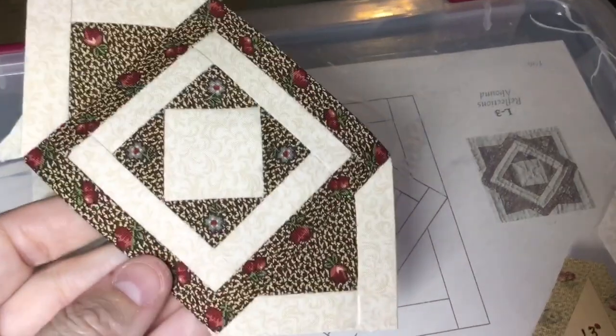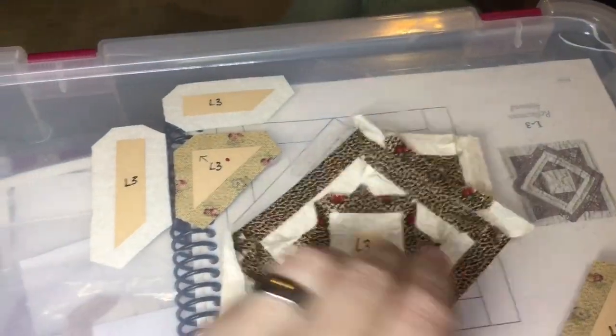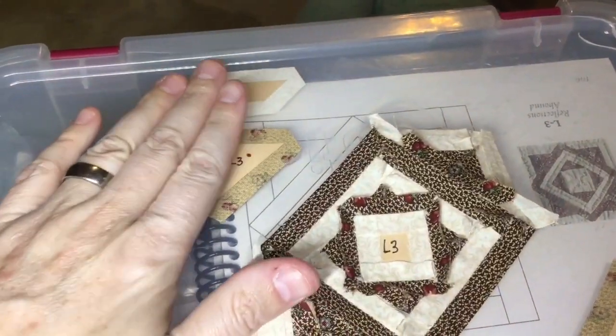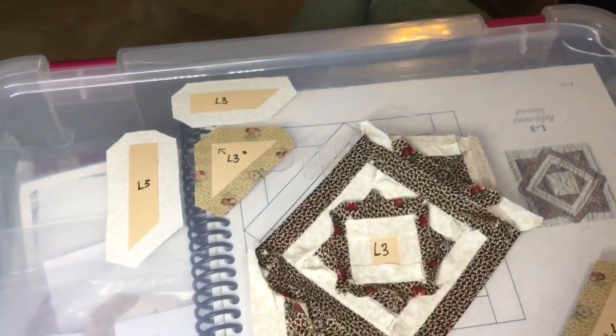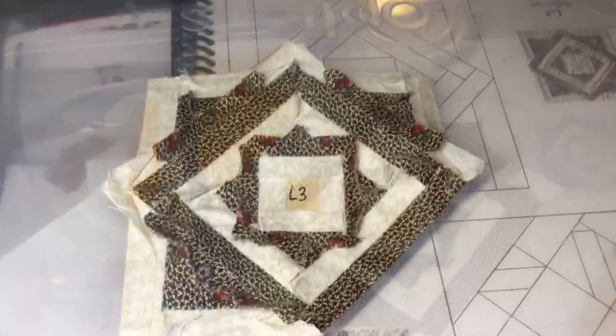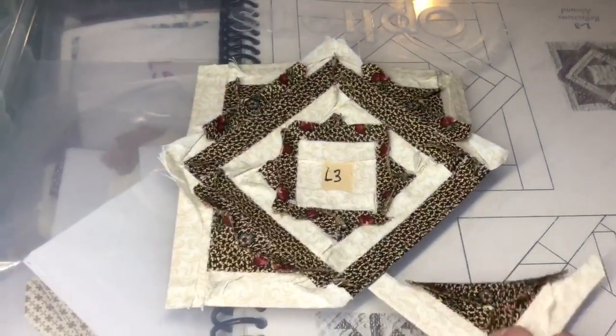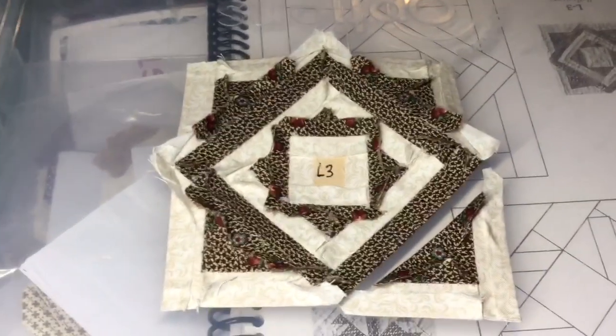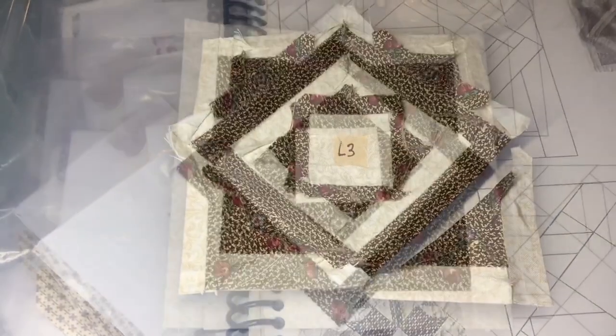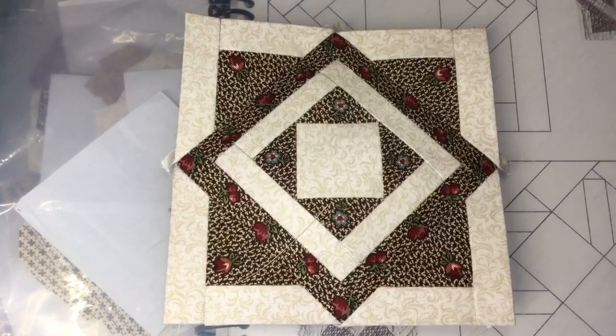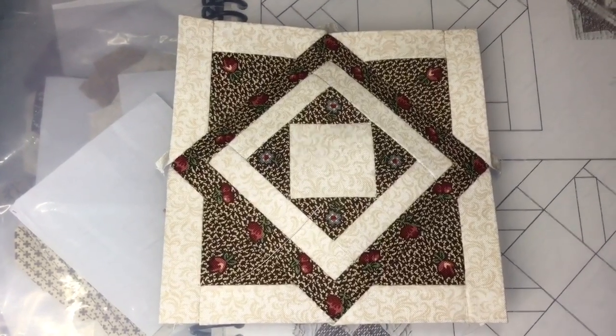Now I will assemble and attach one of the other sides. I've attached my third corner and I've assembled the last one. I just have to attach it to the main section. I've attached my final corner and my L3 block is now complete.